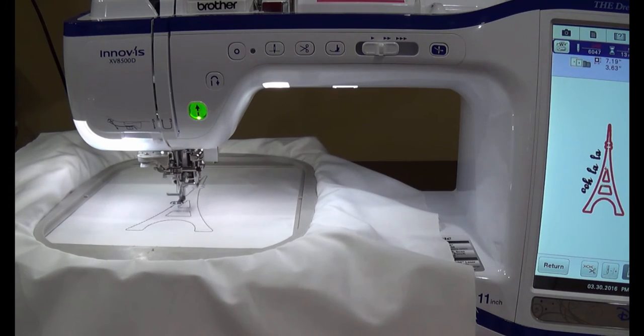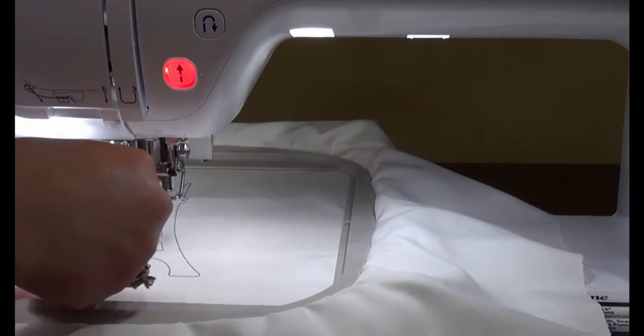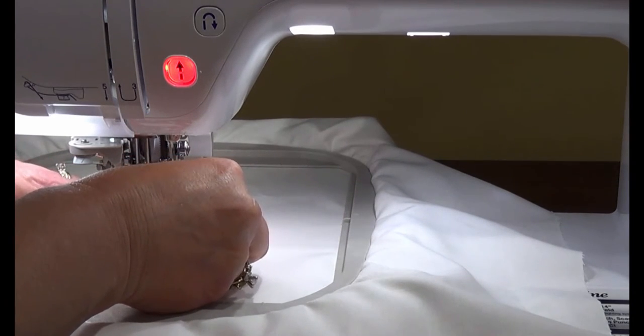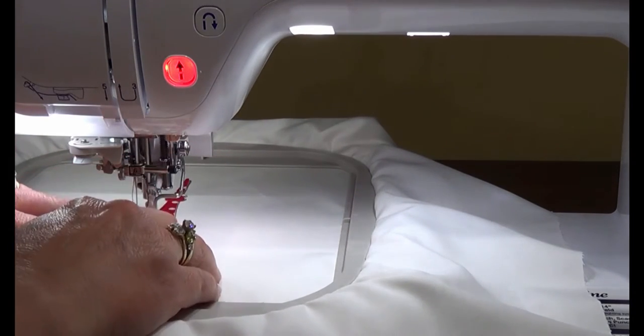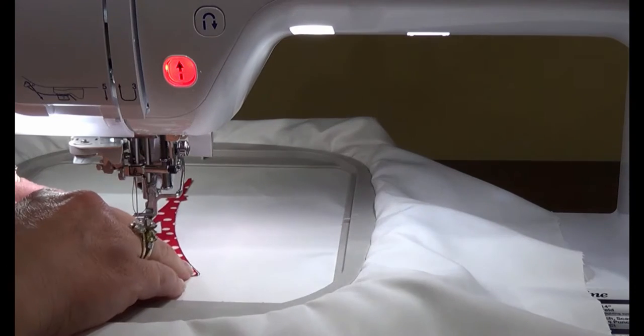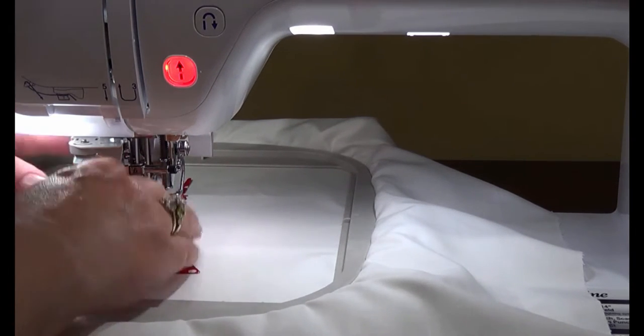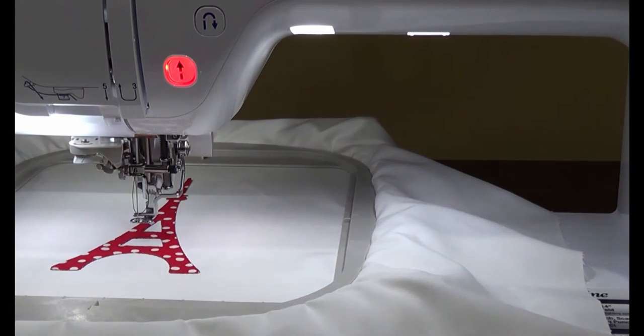After the placement stitch is finished, place the cut fabric from the Scan and Cut into position over the top of the stitching. You may find the process easier if you do this at your ironing board and lightly press the piece into place.